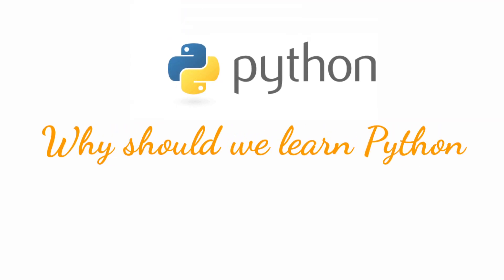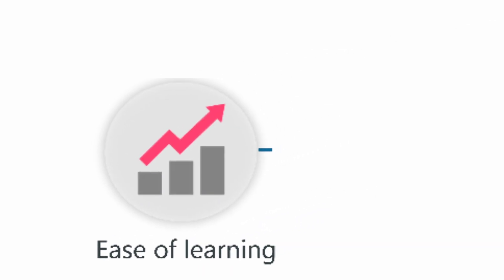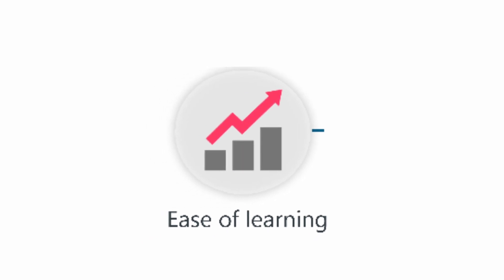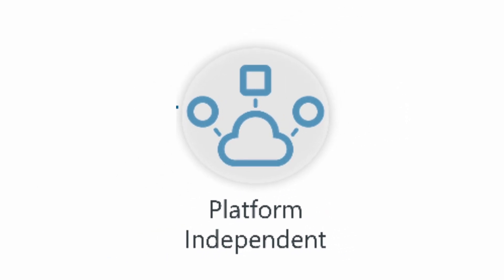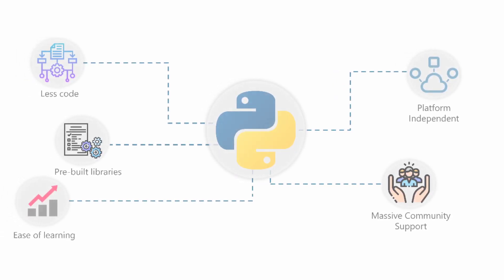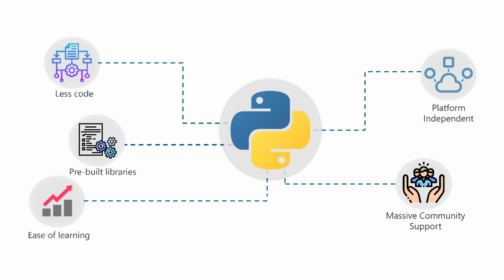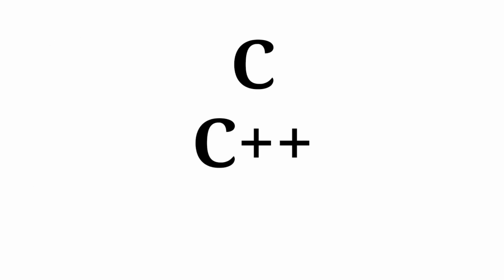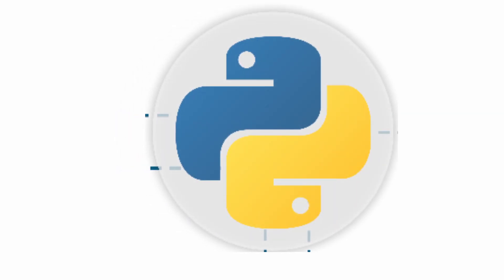Why should we learn Python? To start your career as a software engineer, software developer, or Python developer. First, Python is a very simple programming language — you can understand it easily and its syntax is easy to use, making it a perfect language for someone learning computer programming for the first time. Second, it is free and open source and can be used cross-platform. Third, it has its own standard libraries like NumPy and Pandas, which help you solve common problems. I recommend Python as the basic programming language to learn in the current situation.